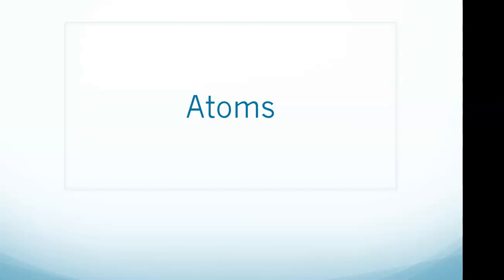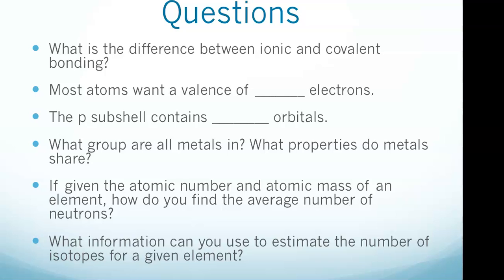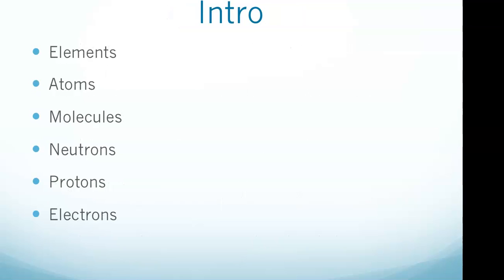Let's take a look at atoms. We start off each of these science videos with several questions that we're going to try to answer. Topics include ionic and covalent bonding, valence electrons, subshells, understanding groups as they fit into the periodic table, the average number of neutrons, how to calculate that, and some stuff about isotopes.